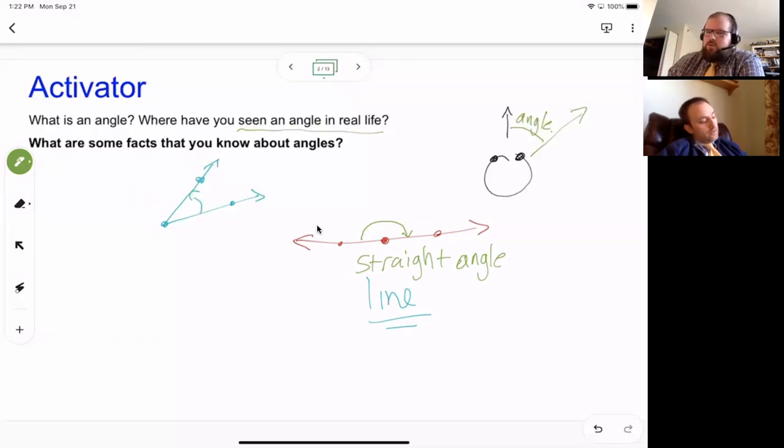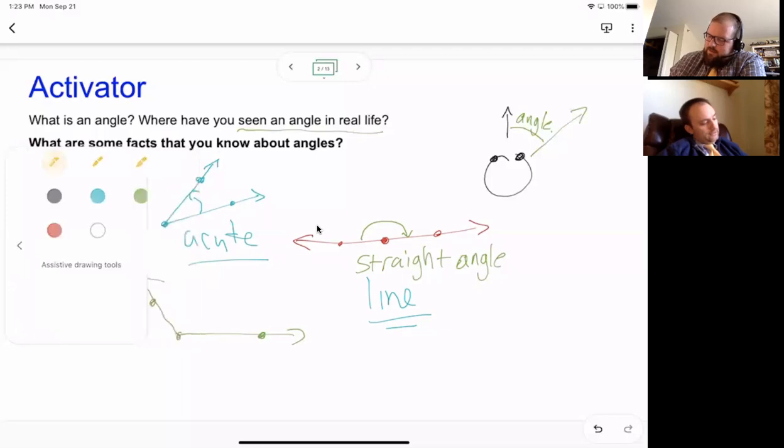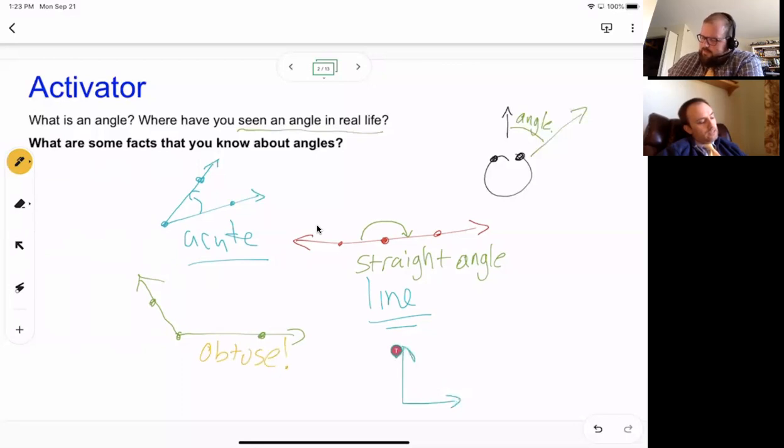So we're going to call this a straight angle because it's opposite rays that make a straight line. By the way, all lines are straight. I heard there were cute angles also. And why are they cute? Because they're so small. So that would be different than let's say a really big angle. You'd have to be obtuse to not understand that.